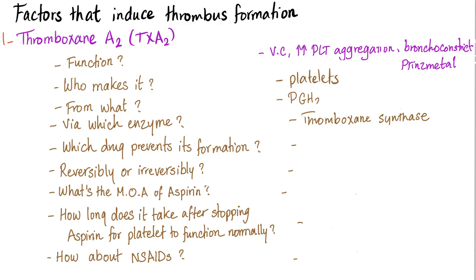Which drug prevents its formation? Aspirin. Does aspirin prevent the formation of thromboxane A2 reversibly or irreversibly? The answer is irreversibly. What's the mechanism of action of aspirin? It inhibits cyclooxygenase. How long does it take after stopping aspirin for platelets to function normally again? The answer is 48 hours.